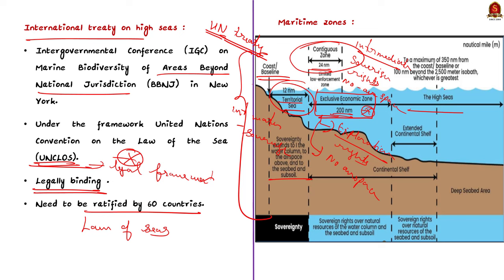The ocean surface and water column beyond the exclusive economic zone are referred to as the high seas. It is considered the common heritage of all mankind and is beyond any national jurisdiction. States can conduct activities in these areas as long as they are for peaceful purposes such as transit, marine science, and undersea exploration.